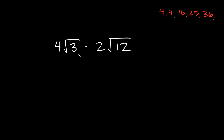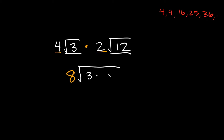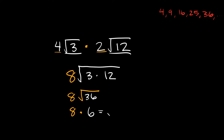Here we have 4 root 3 times 2 root 12. As you can see, we have numbers on the outside of the radicals. What you want to do is combine those numbers by multiplying them together — 4 times 2 equals 8. Then we multiply the radicals together: root 3 times root 12, combining those under one big radical symbol gives us the square root of 3 times 12. What is 3 times 12? That's equal to 36. So we have 8 times the square root of 36, and the square root of 36 is equal to 6. So then we have 8 times 6, which equals 48. That's your answer.